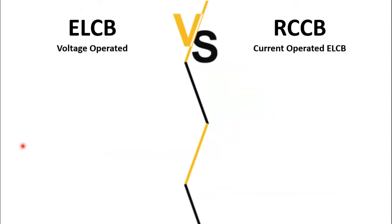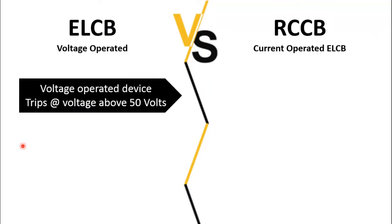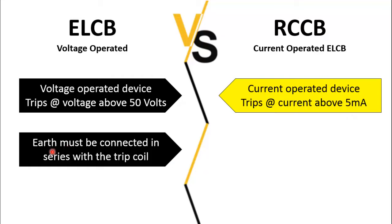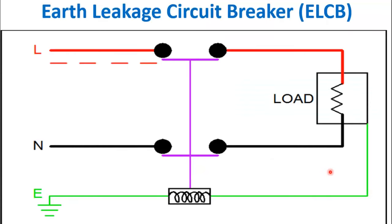After seeing the working principle of both breakers, we can now see the differences between them. The ELCB is voltage operated and it normally trips at voltages above 50 volts, whereas for RCCB it trips at currents above 5 milliamperes. For ELCB, the earth must be connected in series with the trip coil, because all the current flowing through the earth conductor has to pass through the trip coil in order to make the circuit breaker operate.